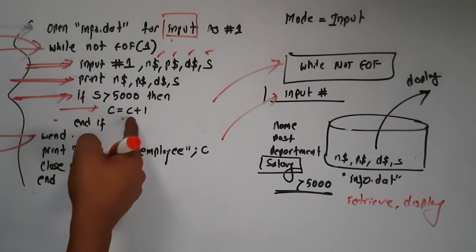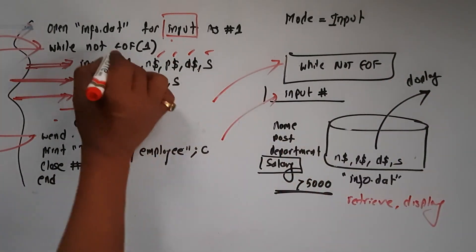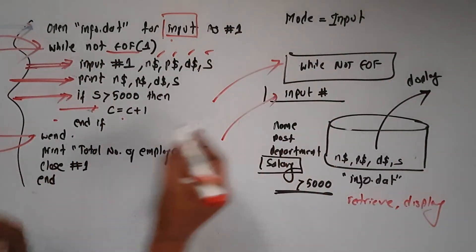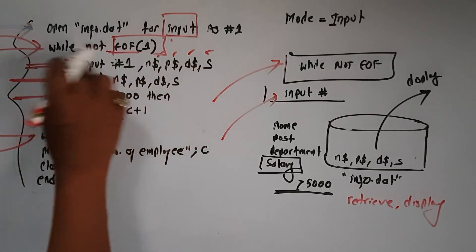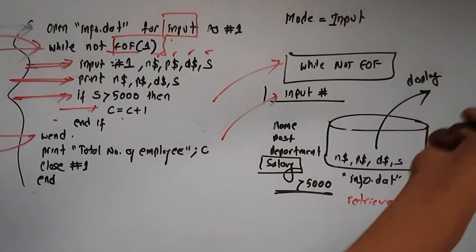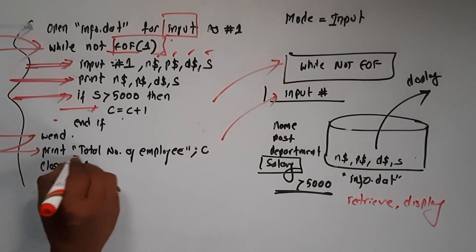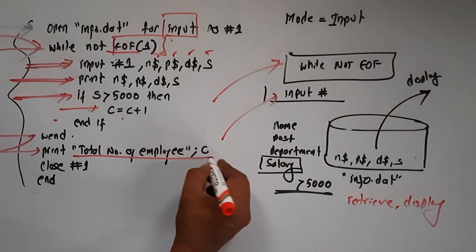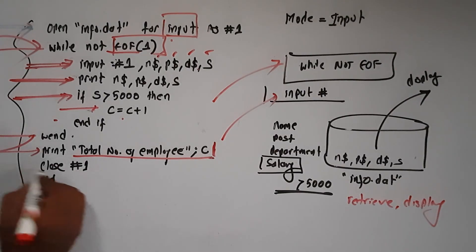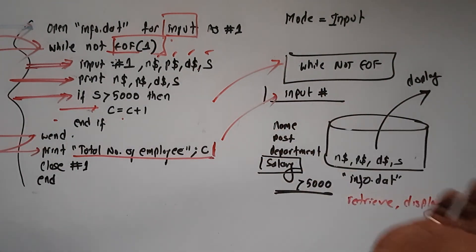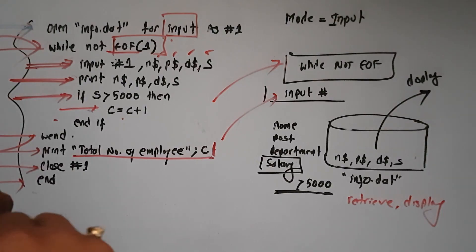The count C starts and increments when salary is greater than 5,000. We need to exit from the loop when all files are read. Then we bring the loop to the end. It is not complicated. We stop at the end of the file, print C using CPRINT, and then close the file. This is the complete program.